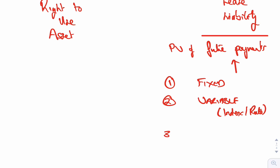Another future payment, and by the way, those that aren't indexes or rates, they just get taken to the income statement as an expense. So you've got fixed, variable if it depends on an index or rate.